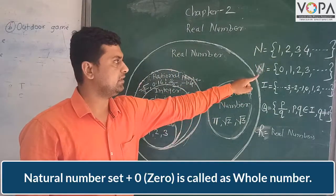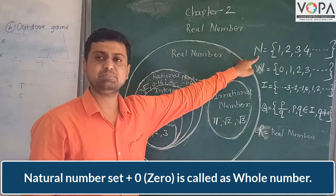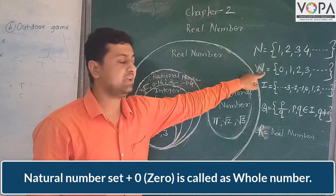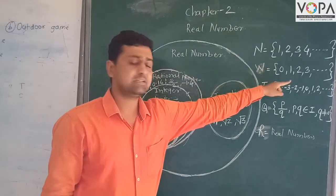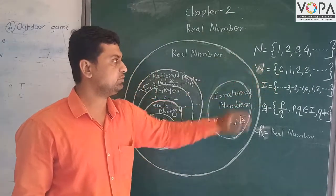Whole numbers: natural number set plus zero is called as whole numbers.